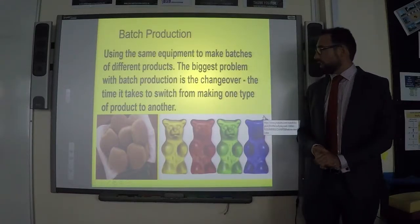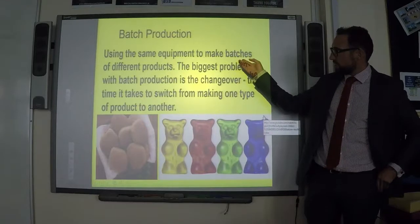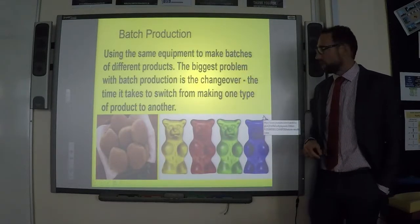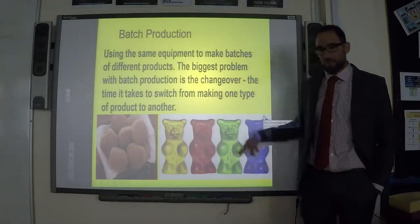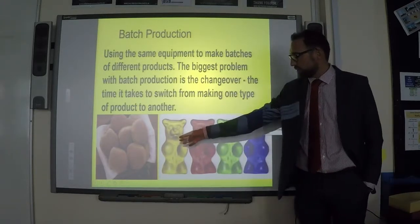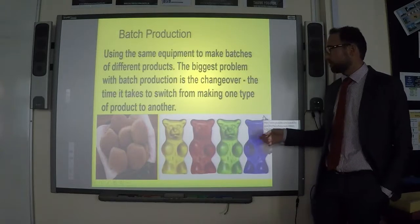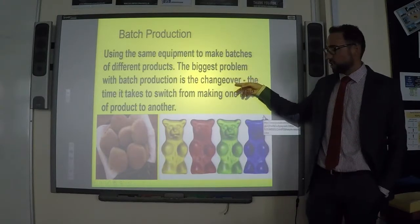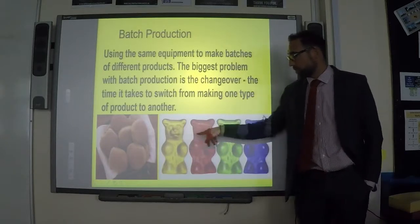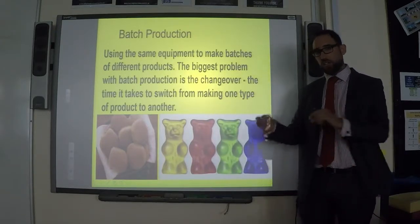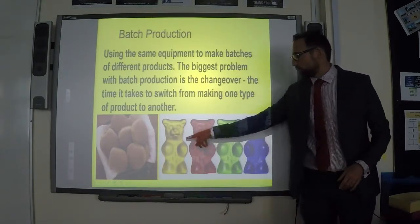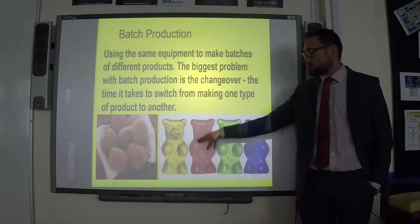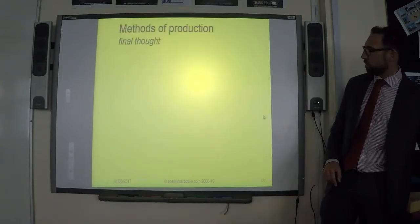Another definition for batch production: it's using the same equipment to make batches of different products. For example, you make a batch of yellow gummy bears, then a batch of red gummy bears, then green, then blue. However, the biggest problem is the changeover — in order to change from yellow to red, you have to stop the machine, change the colours and the mix. While you're changing the machines over, you're not producing anything.